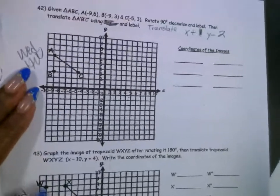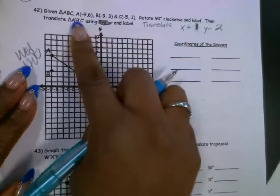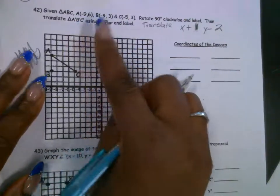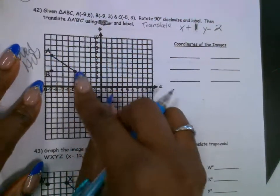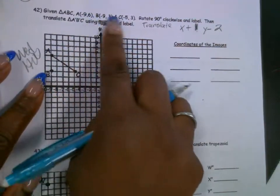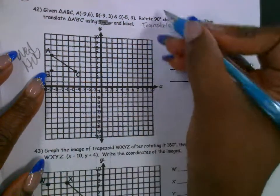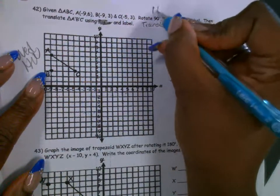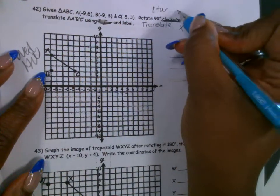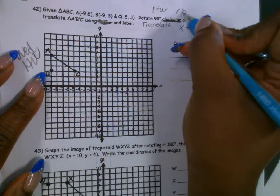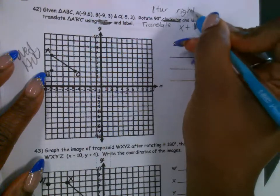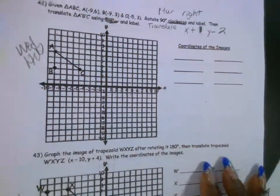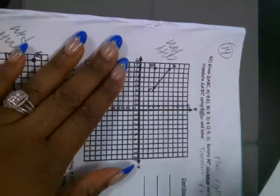Let's look at the next one. These are the points — the ordered pairs. Going to rotate 90 degrees to the right, which is 1 turn to the right. So turn it this way, just like this, to the right one time.